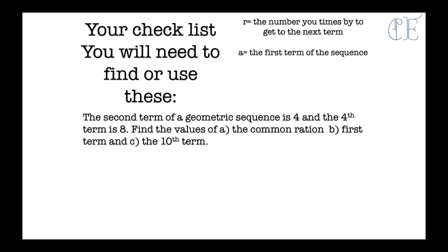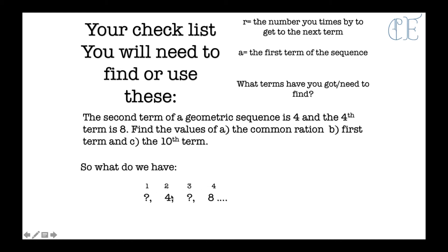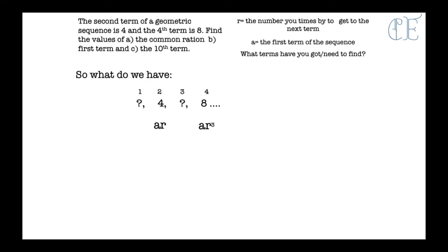For part a, we've got to find the common ratio. We have 4 terms — we don't know the first or third ones. We know that our second term is a multiplied by r, our first term is always a, our second term is always ar, the third is ar squared, and the fourth is ar cubed. We can use the fact that dividing one term by another gives us r, to help find the answer.